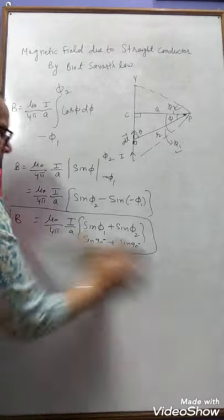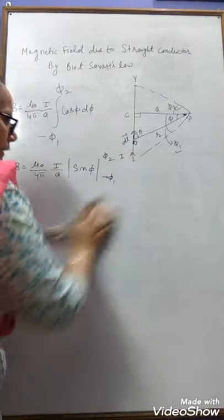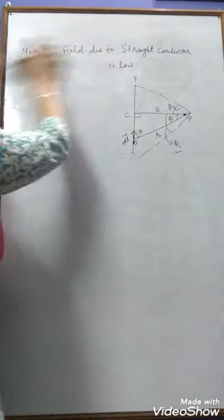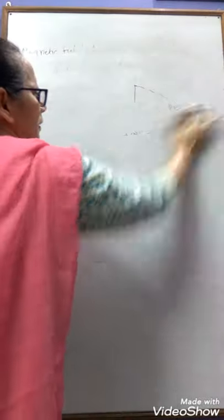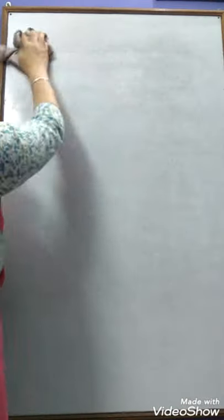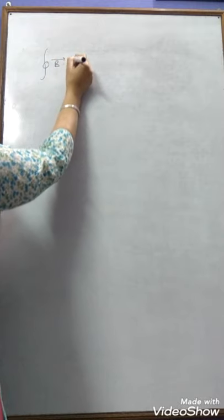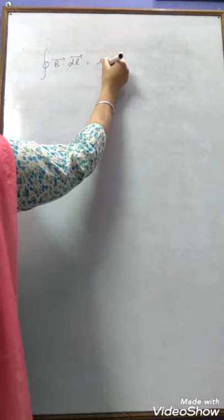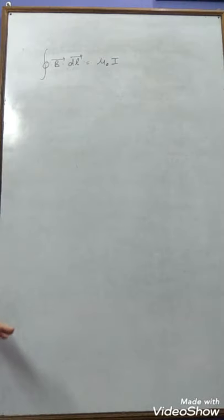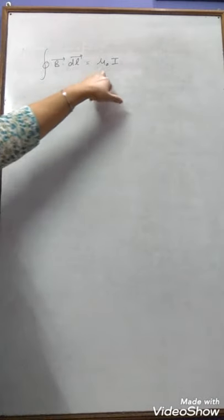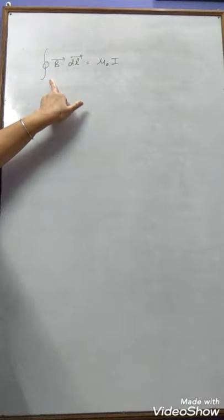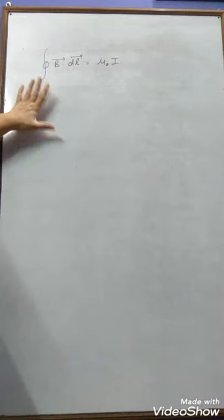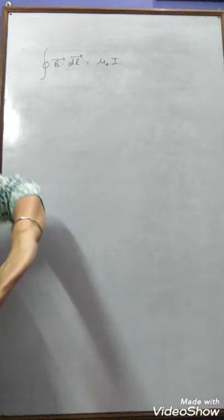Next is Ampere's Circuital Law — a very important term in this magnetism chapter. Ampere's Circuital Law states that the line integral of the magnetic field for a closed path is equal to μ₀ times the current flowing through the circuit: ∮B⃗ · dL⃗ = μ₀I. We prove this law for both a circular path and an arbitrary path.